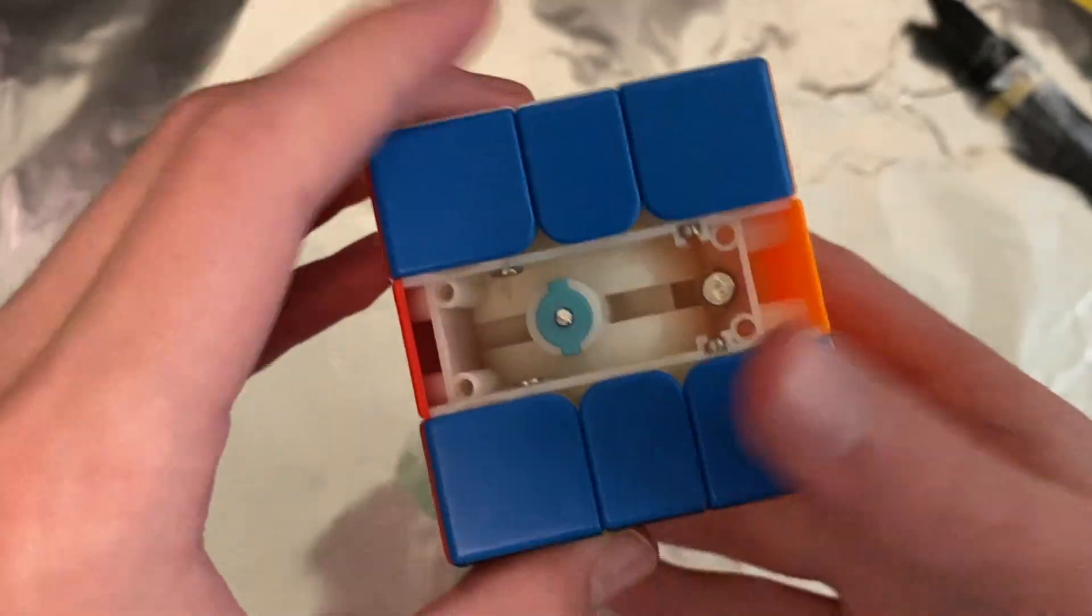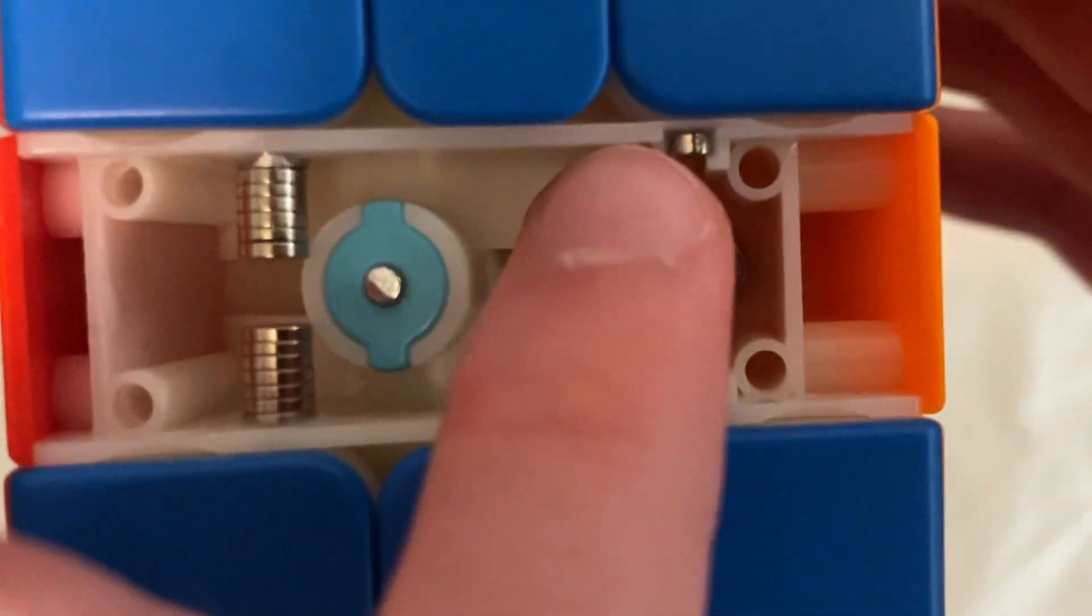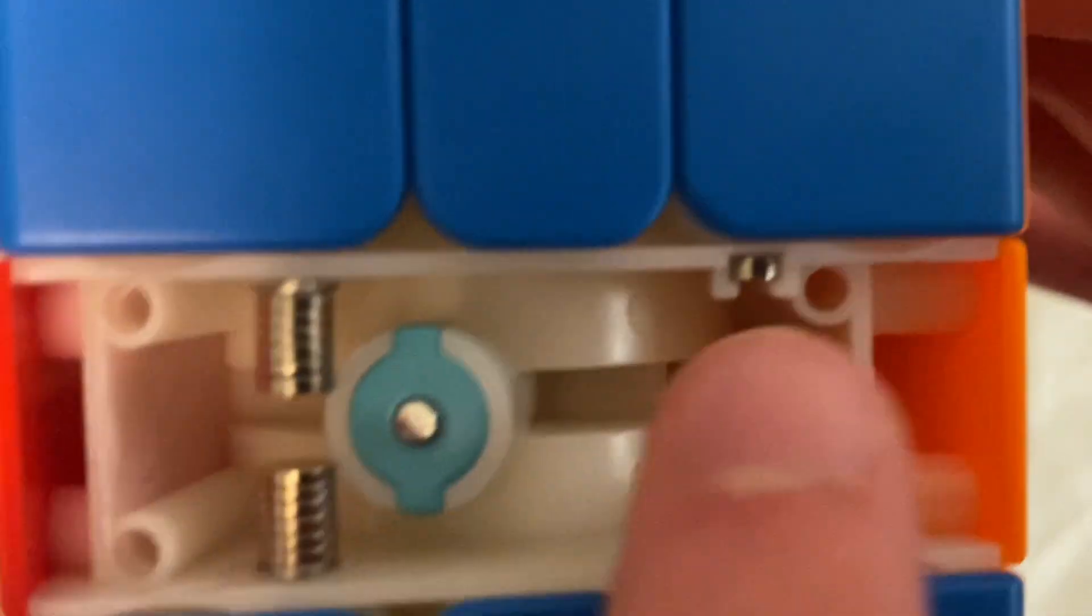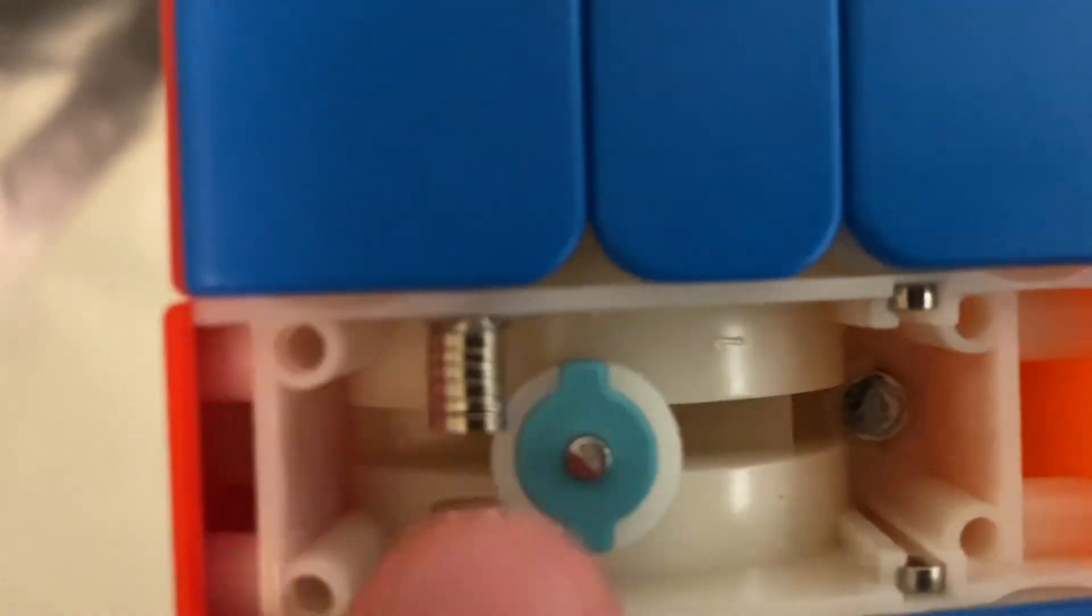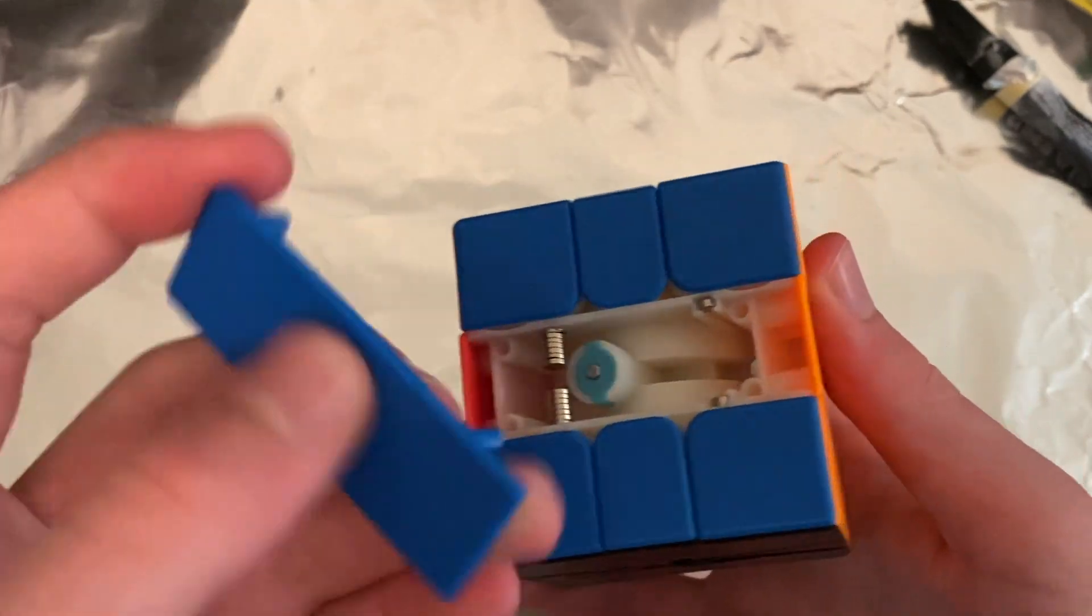And then the same thing on this side. The reason that there's so many here is that here the plastic is a whole lot thinner than here, so you're going to need a lot more magnets. And the stronger the magnets, the better. So now you're going to put the center caps back on.